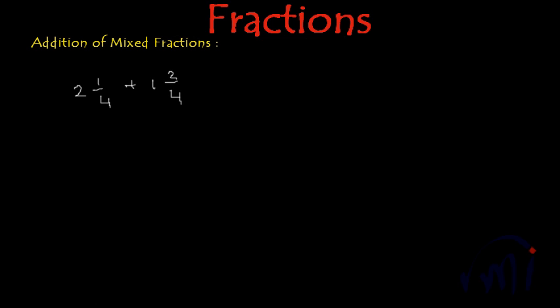So how to do this addition? One method is to convert this into improper fraction and then follow the normal route of addition. But there is one more method which is a shortcut and very fast where we first add these integral parts of both the fractions.